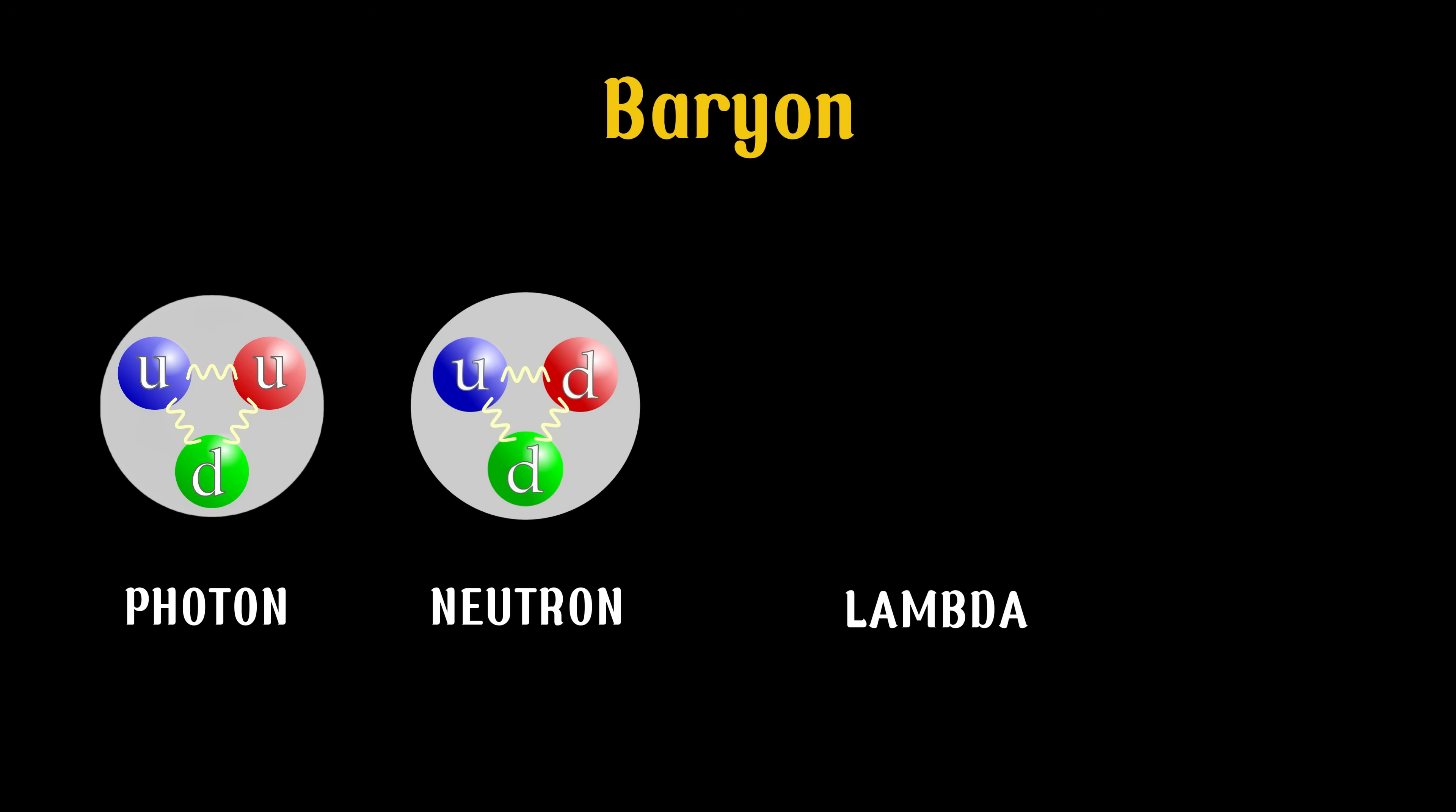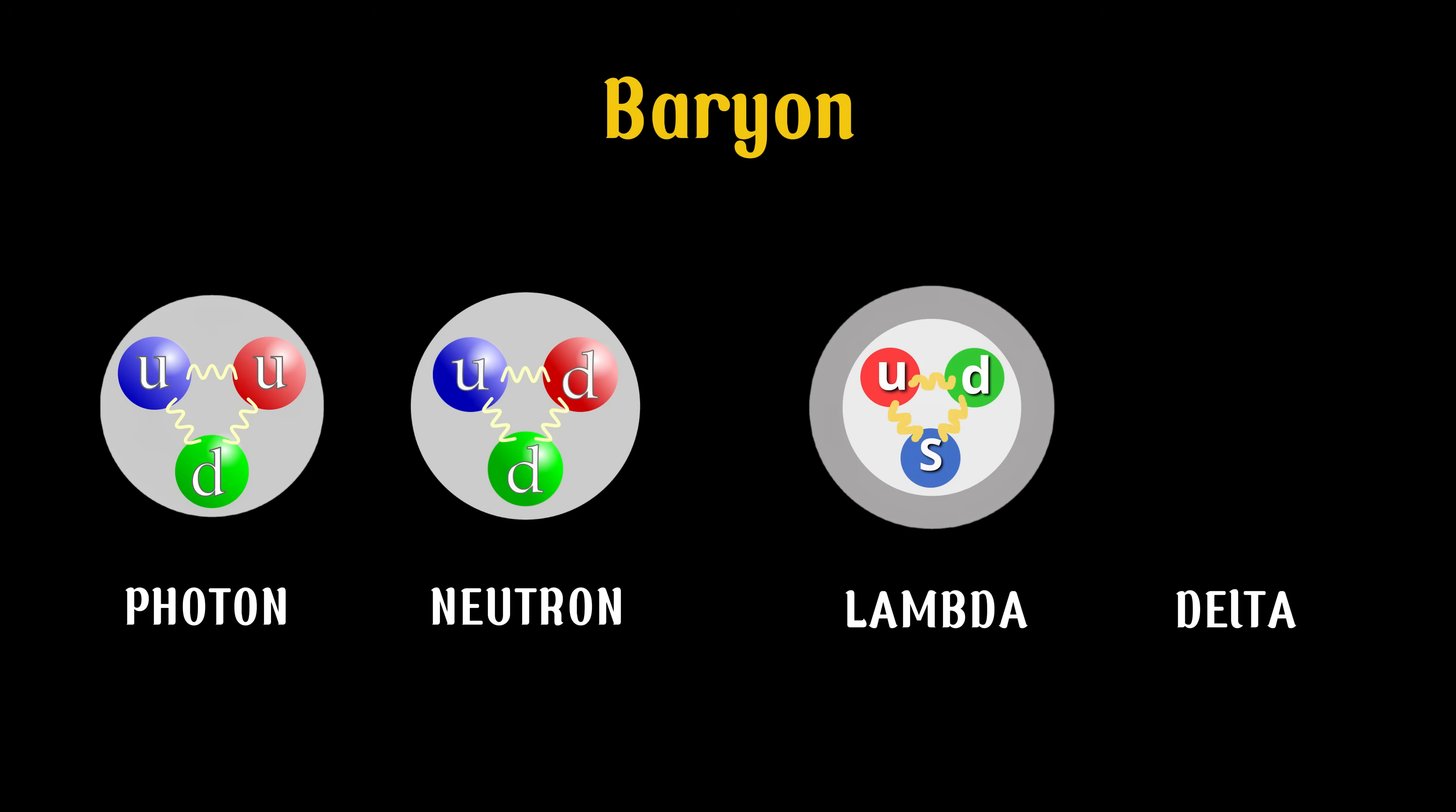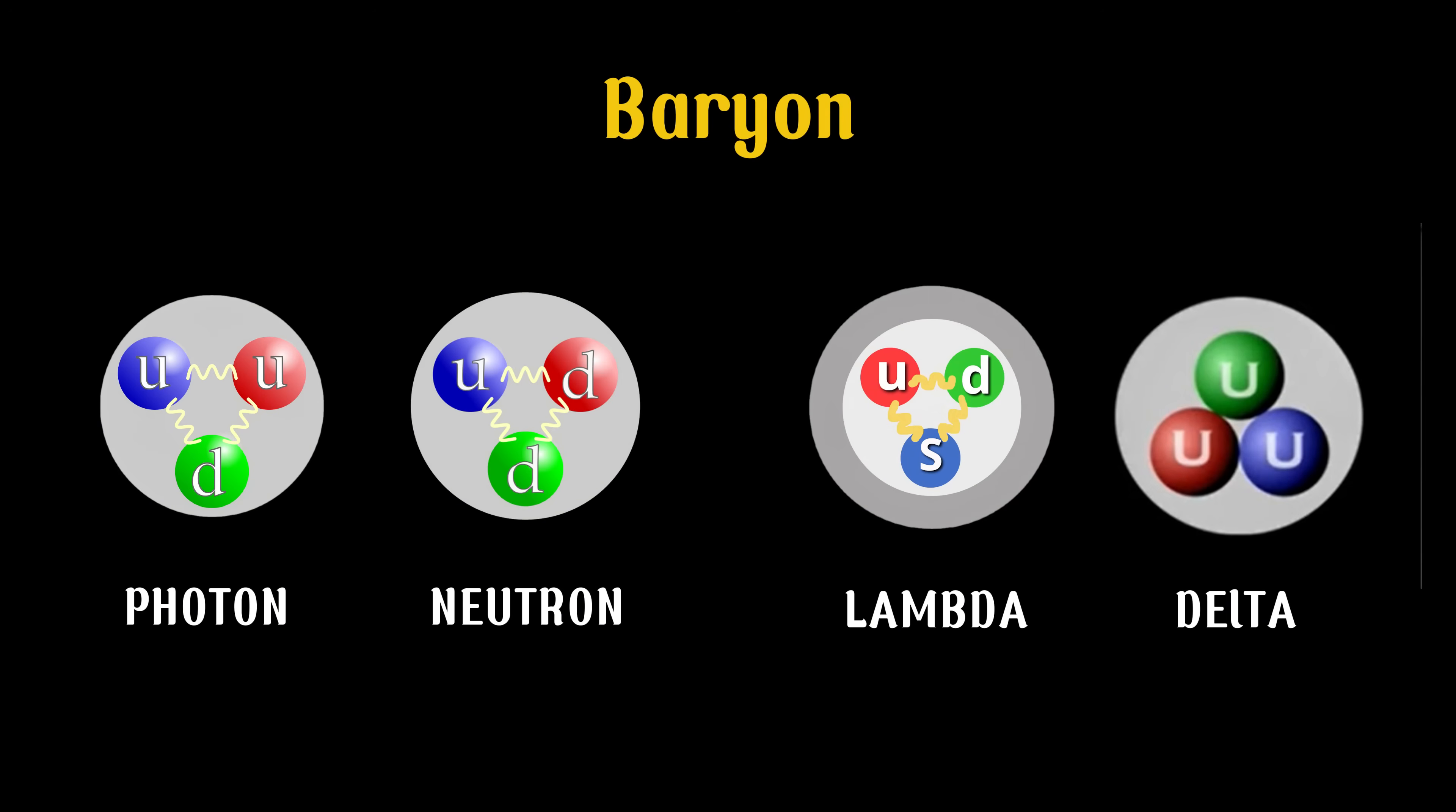This law states that the total number of baryons in a closed system remains constant through all physical processes, including nuclear decay, fusion, or particle interactions. Let's clarify what a baryon is. A baryon is simply a particle made of three quarks or three antiquarks. For example, protons and neutrons are baryons, each composed of three quarks.